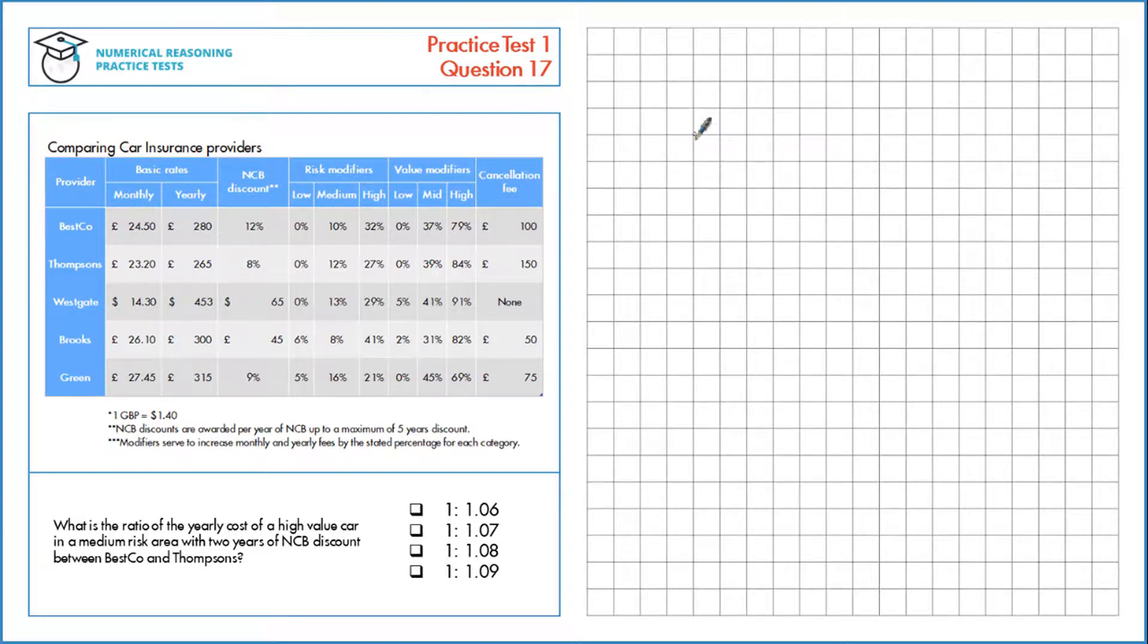First, let's calculate the cost for Besco. We've got to increase the cost by a medium risk area, that's 10%, and a high value car, that's 79%. We have two years of no claims bonus discount, so we're going to use that too.